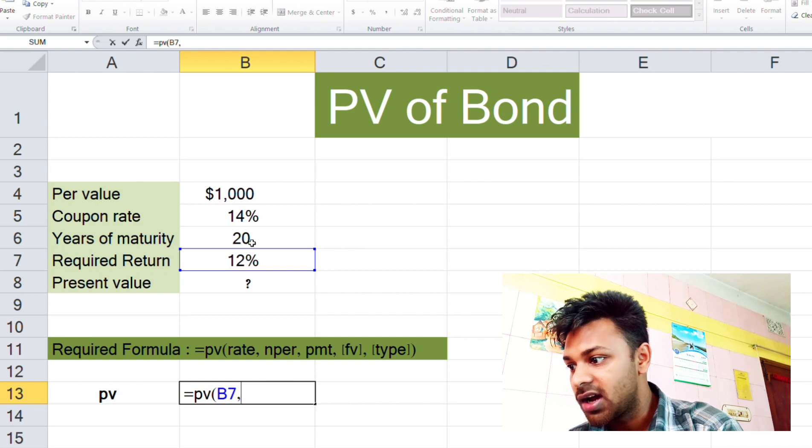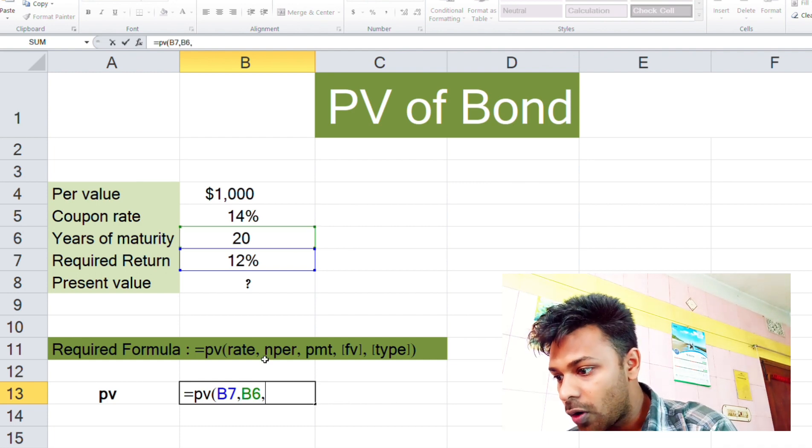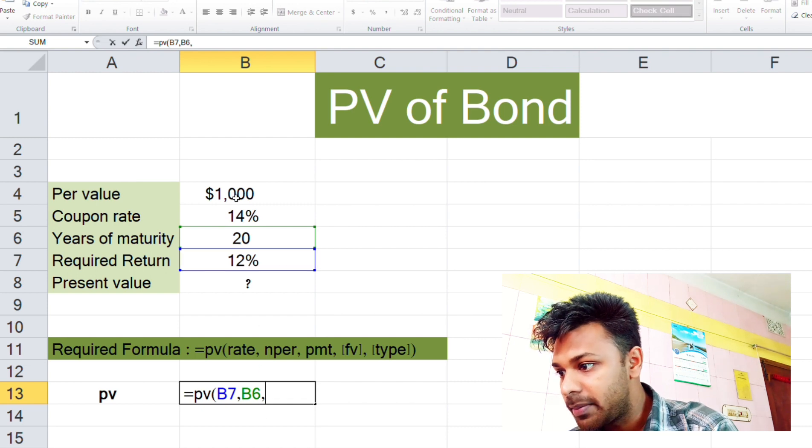Click on it and now multiplication sign, again 14% coupon rate, 14%. And comma. Then again our FV, we need FV.